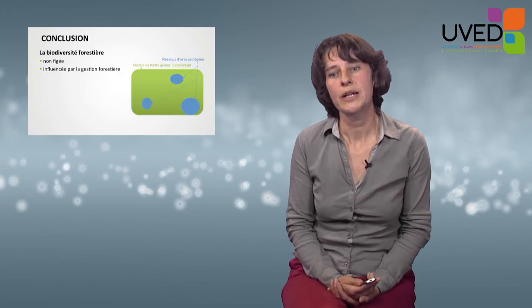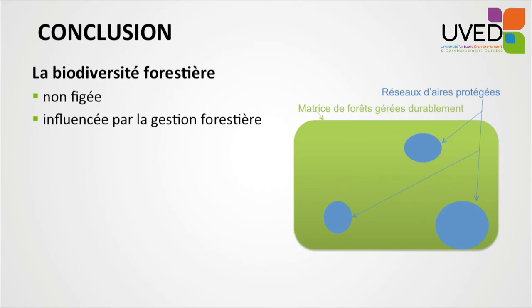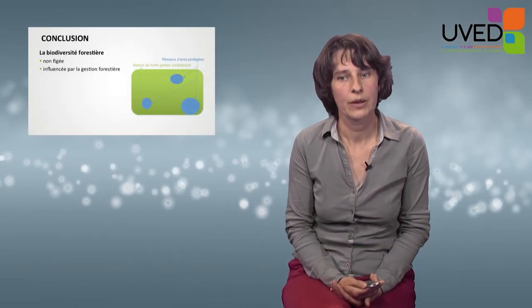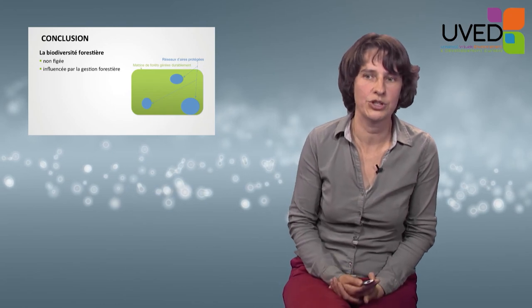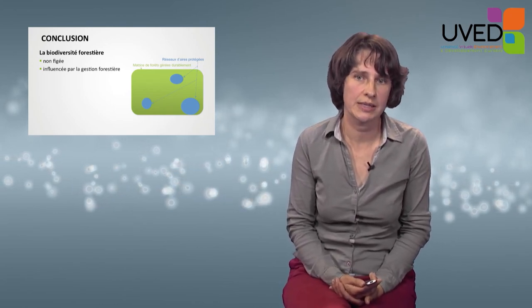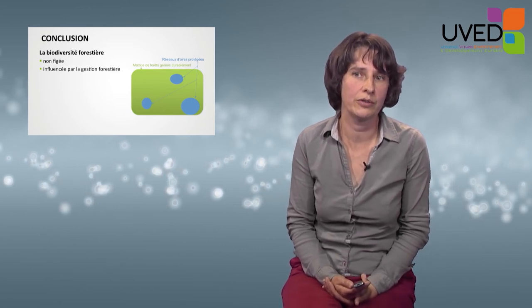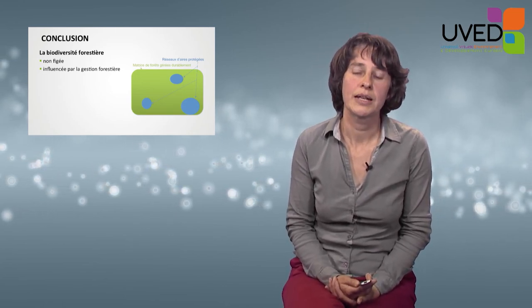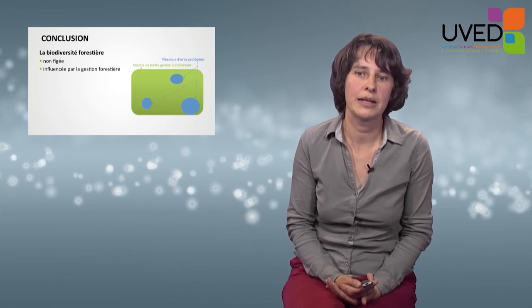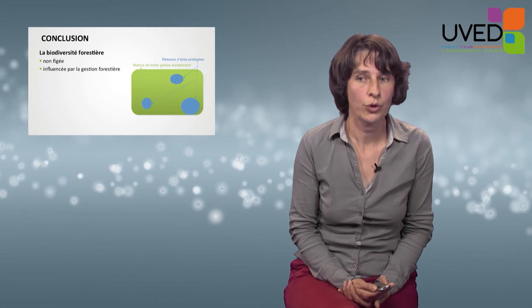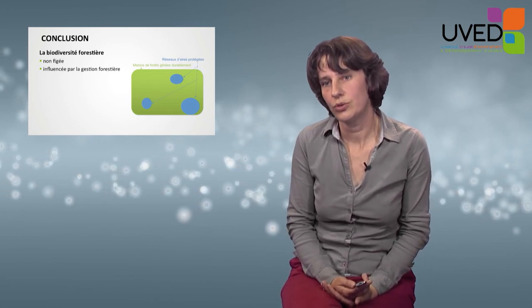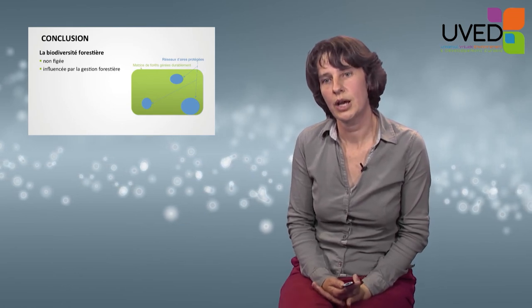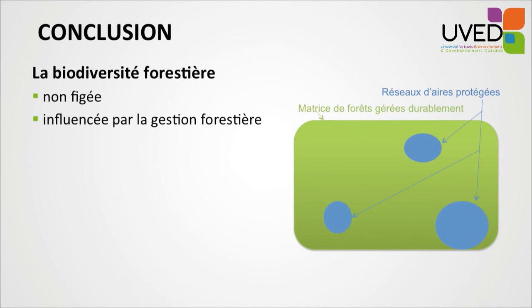In conclusion, forest biodiversity is not fixed. It changes over time during the forest succession process depending on the stage of natural forest regeneration, and it is also influenced by forest management. Therefore, biodiversity should be taken into consideration in forest management with a two-stage strategy: first, protected area networks should be organized to preserve biodiversity, and second, forest matrices should be managed in a sustainable way, meaning that outside protected area networks, forest management must reconcile wood production with the preservation of biodiversity and landscapes.